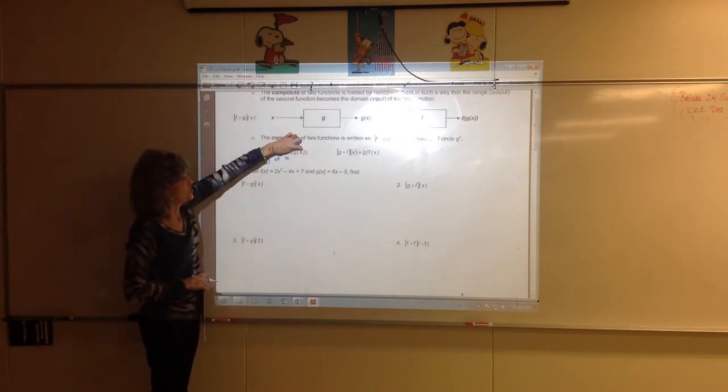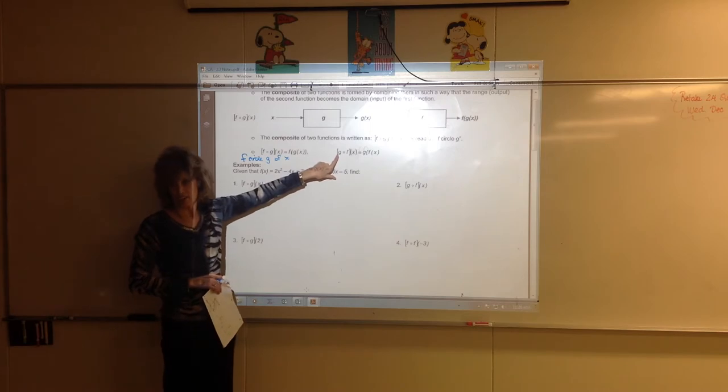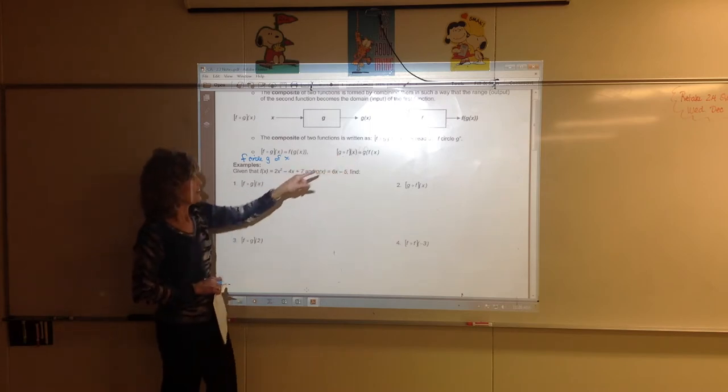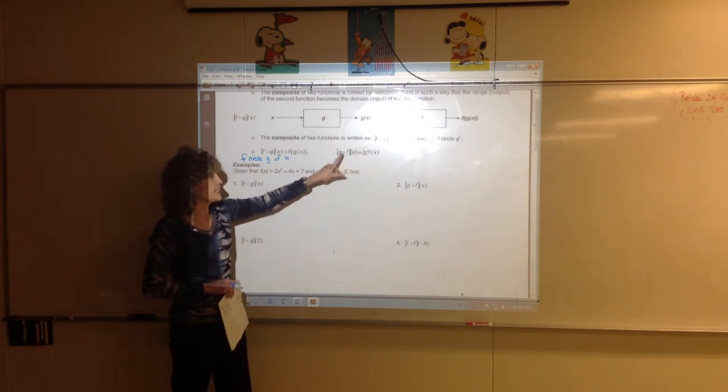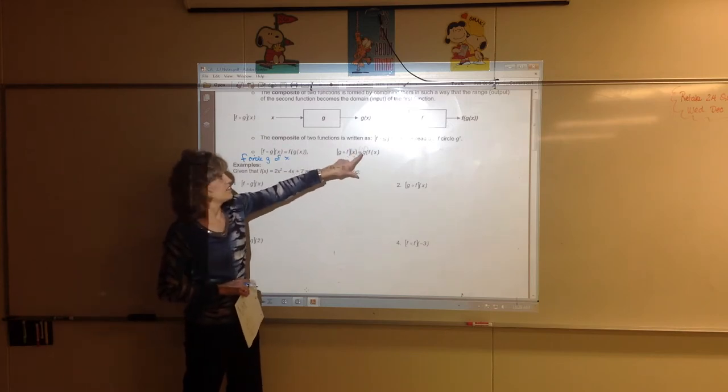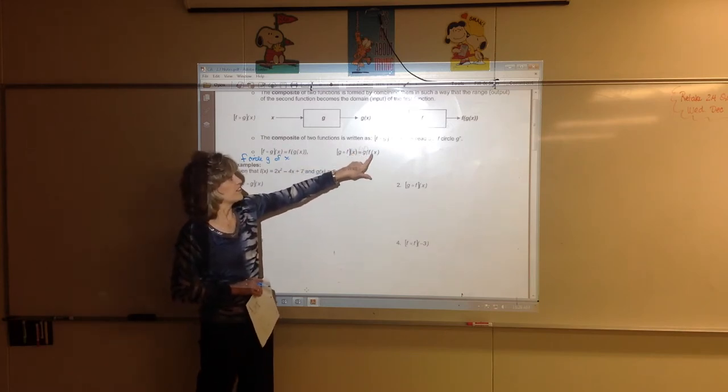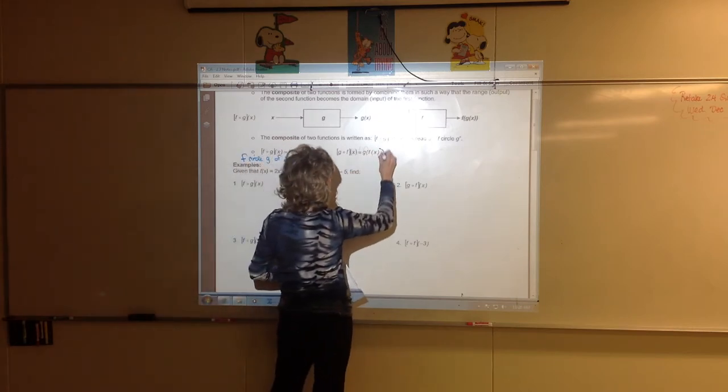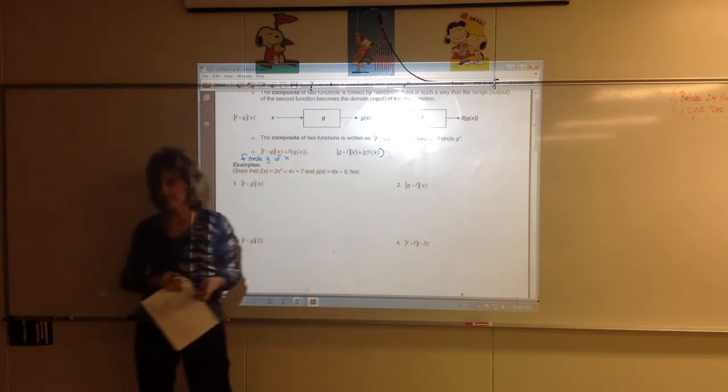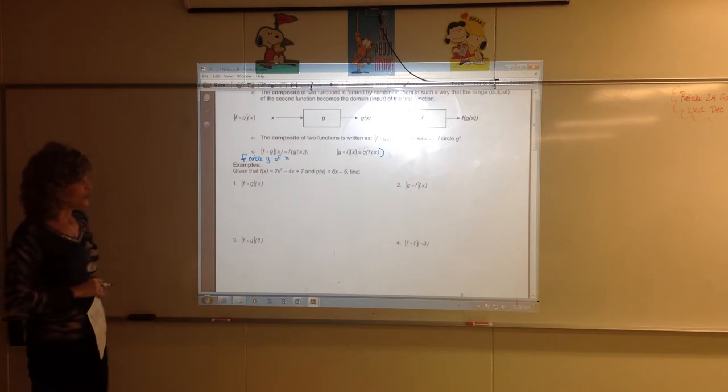f with function g as the input. If you go the other way, golf, you read it g circle f of x. And the three bars here mean it is defined to be function g with function f as the input. G with function f as the input.